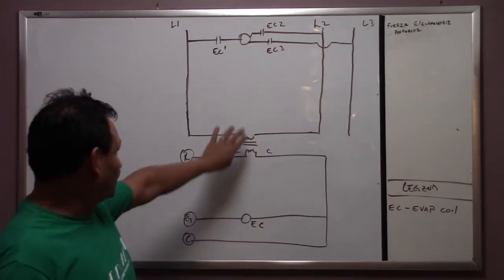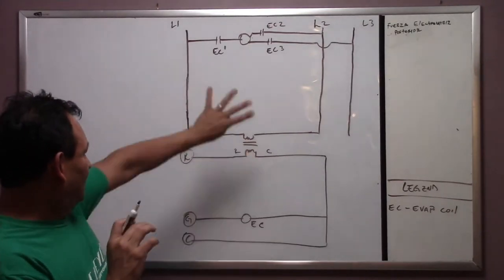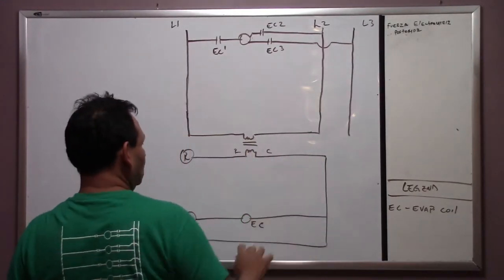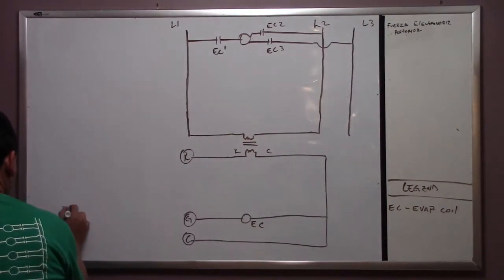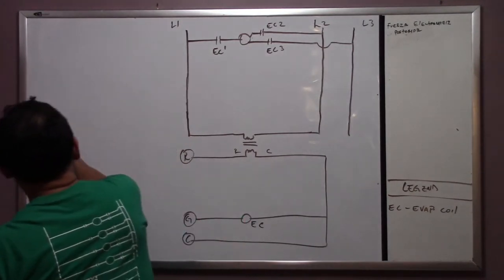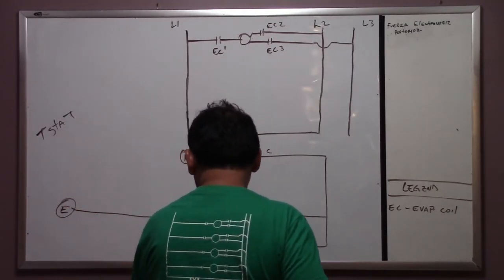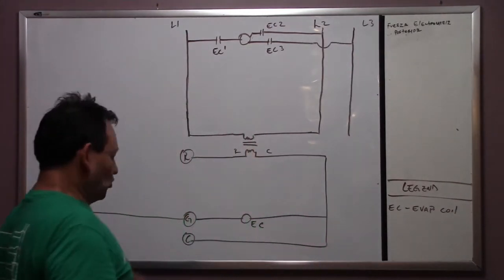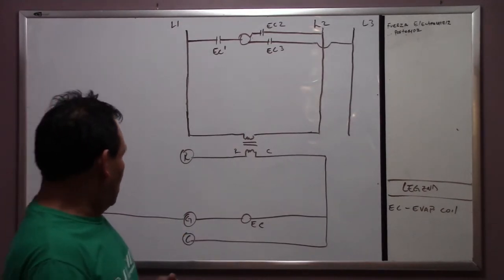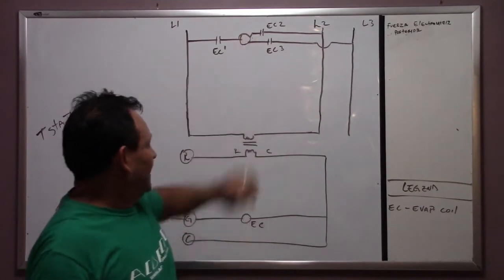On the contactor itself, we have the main voltage and the control voltage inside the contactor. This is your stat, and we are going to have a wire from the stat to G. So when we put the switch on, we are going to energize EC — the evaporator coil contact — and once the coil closes contacts 1, 2, and 3, the fan comes on.